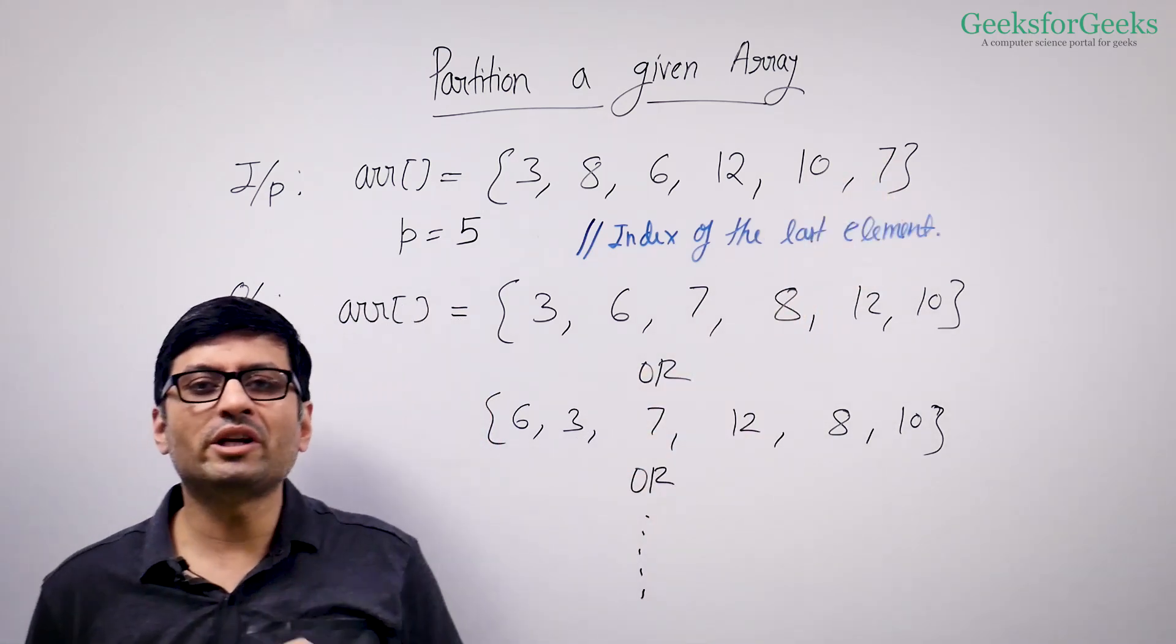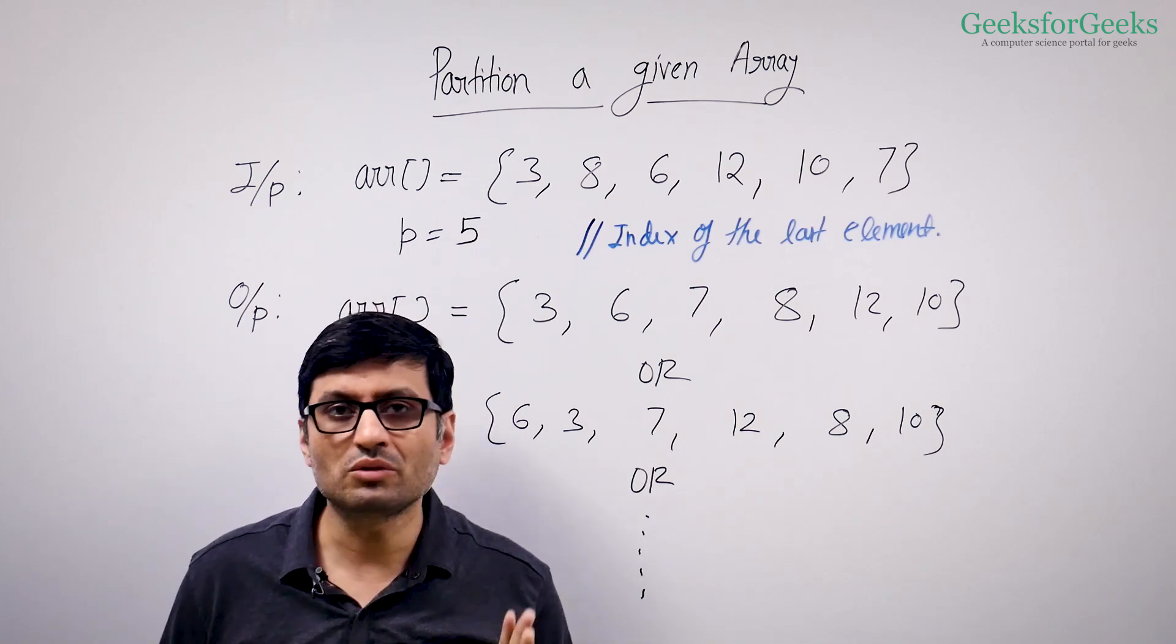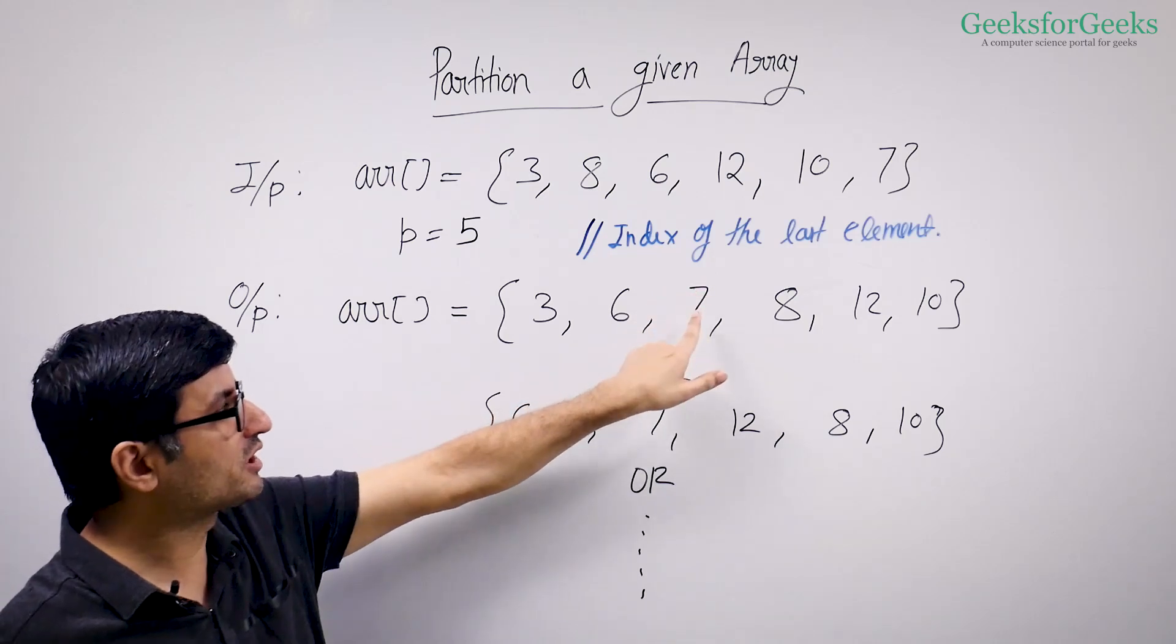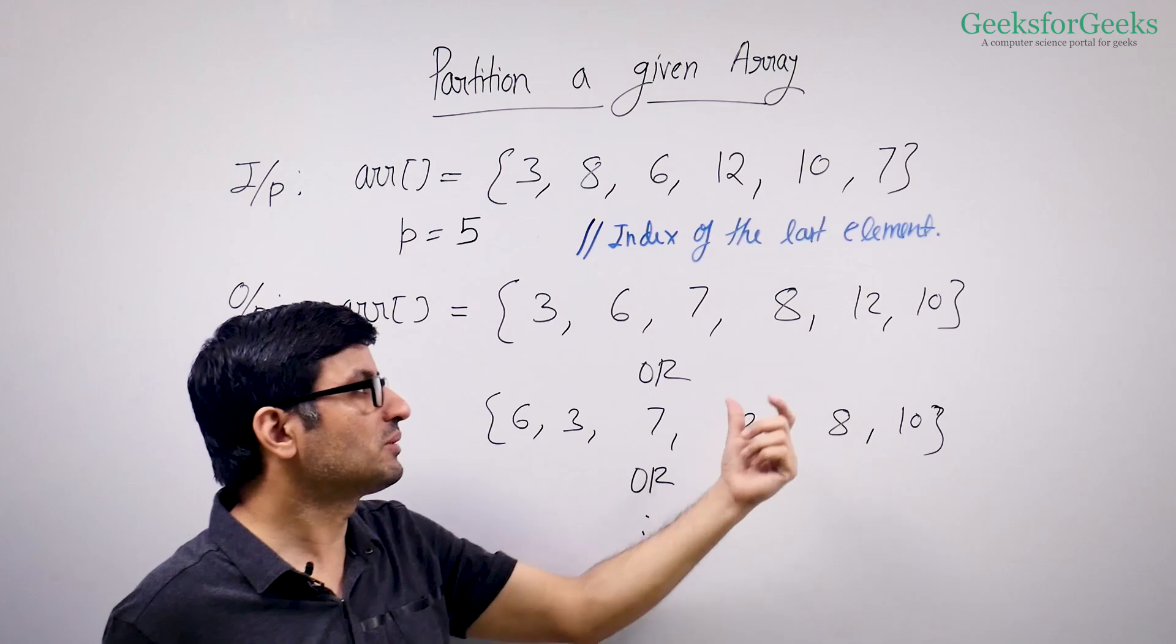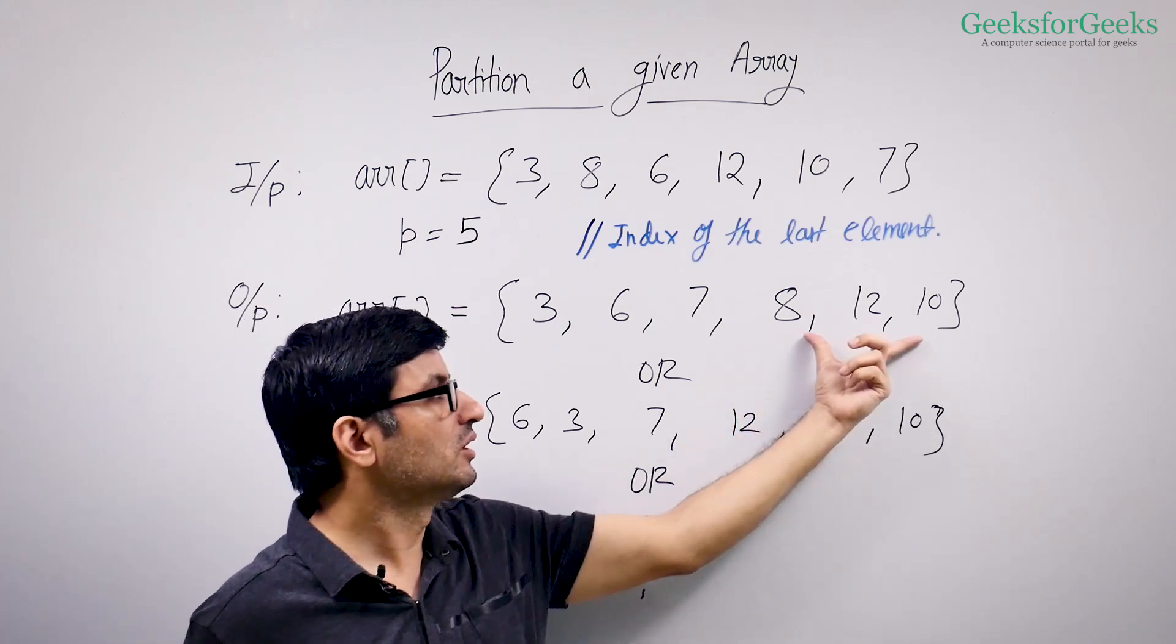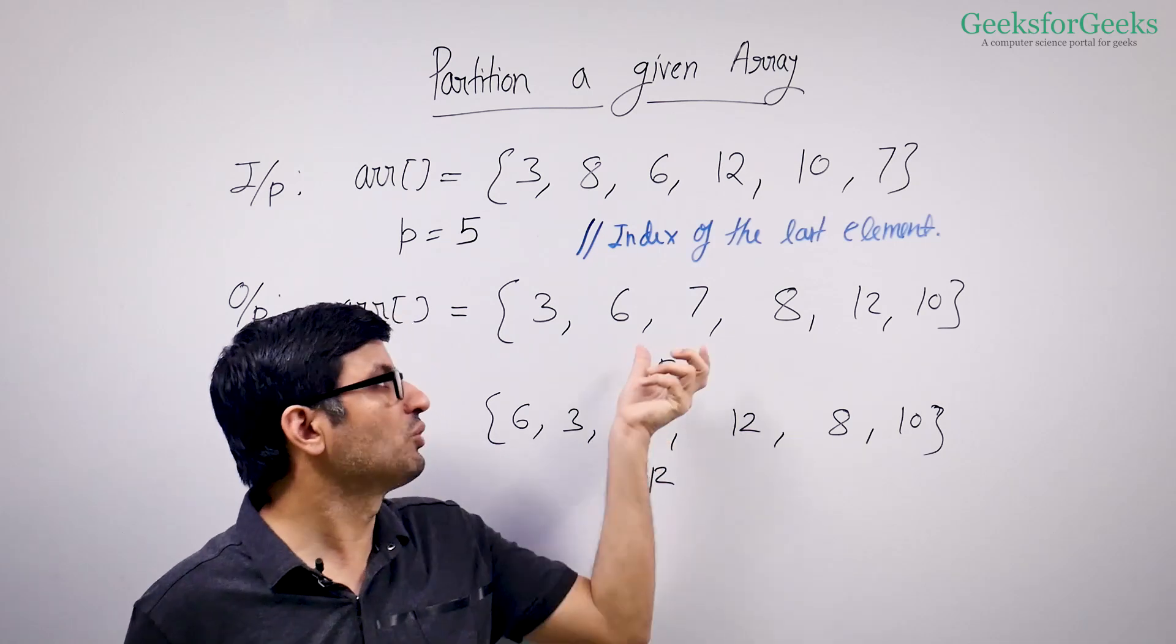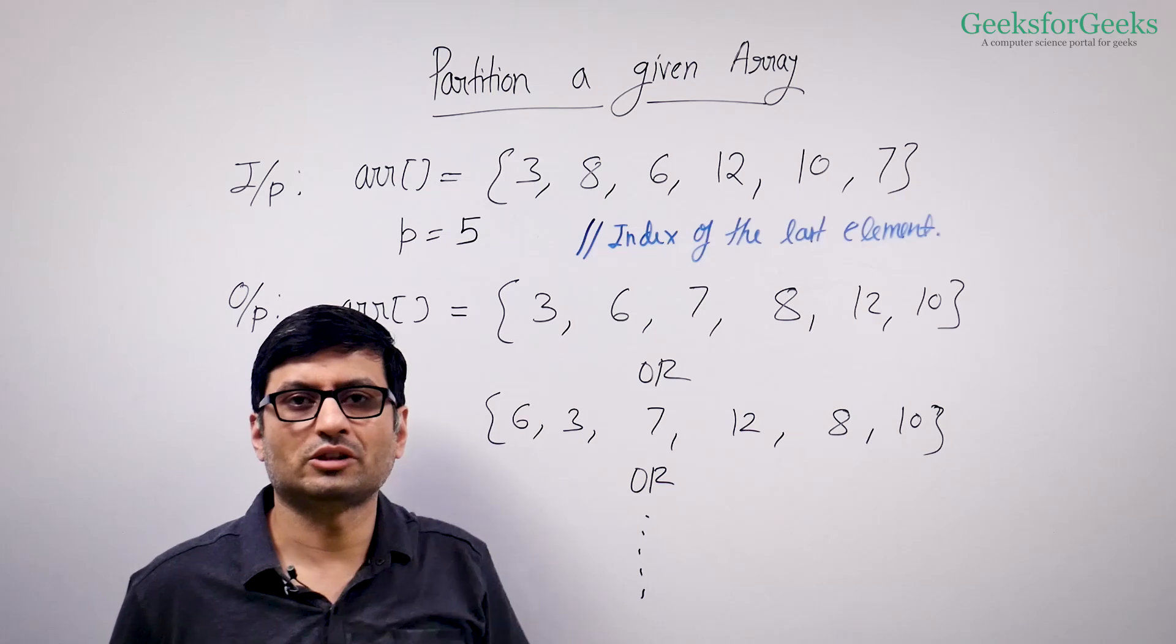So the requirement of the partition function is it should partition the array around 7. All the elements before 7 should come before it, all the elements greater than 7 should come after 7. If there are elements which are equal to 7, they should also come before 7. That's the requirement.